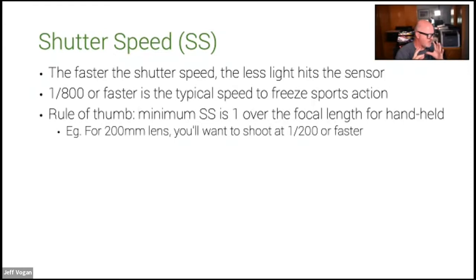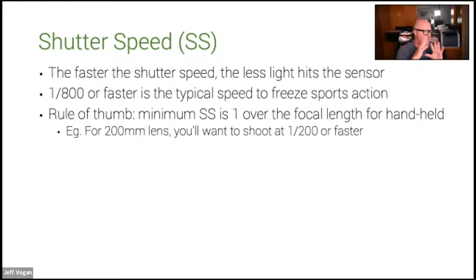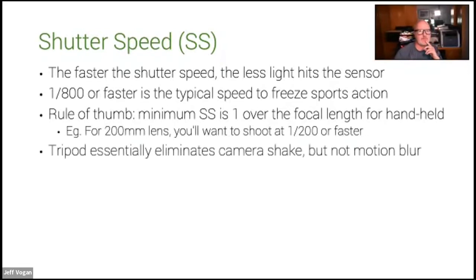I had to use a tripod — I can barely lift the lens — and I used a timed exposure: hit the button, let the camera settle down, and wait five seconds before it activated. One over the focal length is your minimum shutter speed. A tripod essentially eliminates camera shake, but not motion blur.